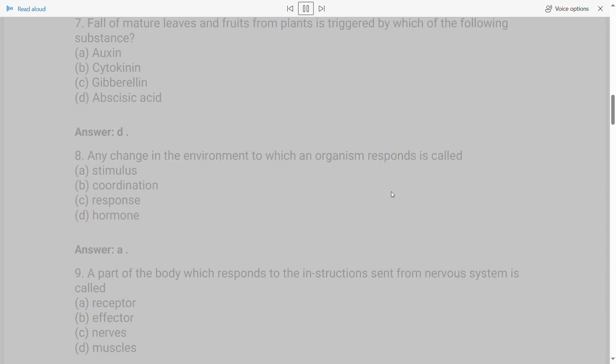7. Fall of mature leaves and fruits from plants is triggered by which of the following substance? A. Auxin B. Cytokinin C. Gibberellin D. Abscisic Acid. Answer: D.